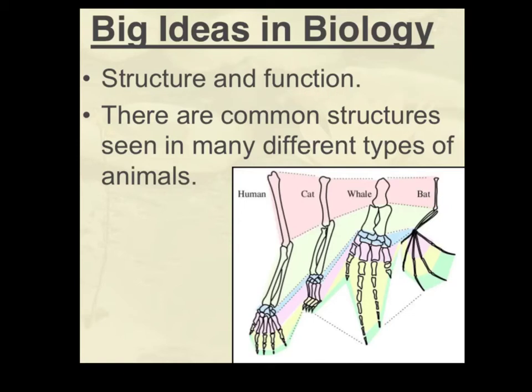The function of the human arm is dexterity. For the cat, it's weight-bearing — it walks on those limbs. For the whale, the forelimbs act as front flippers to direct it while swimming. And for bats, their forelimbs are for flying. So the function of all of these limbs is different, but the structure of all the limbs is the same.